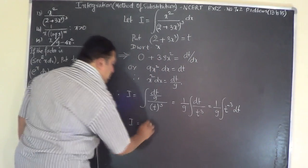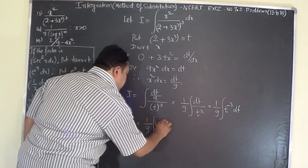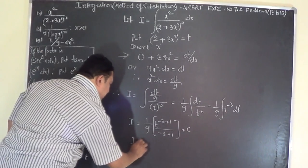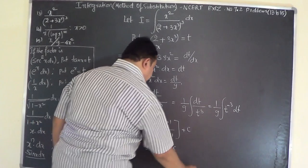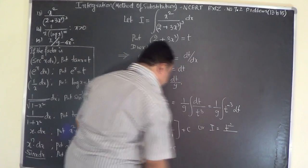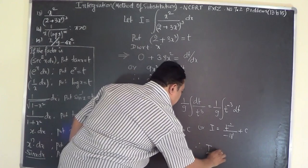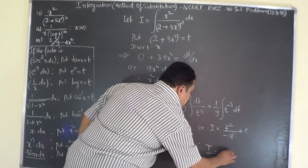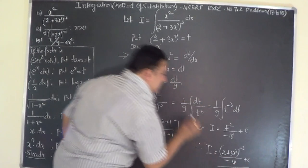So I equals (1/9) times the integral of t^(−3) dt, which equals (1/9) times t^(−3+1) / (−3+1) + C, giving (1/9) × t^(−2) / (−2) + C. Since 9 × (−2) = −18, we get I = t^(−2) / (−18) + C. Substituting back t = 2 + 3x³, the answer is I = (2 + 3x³)^(−2) / (−18) + C.